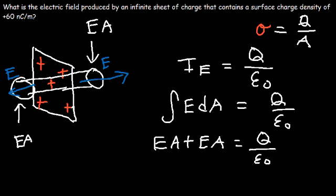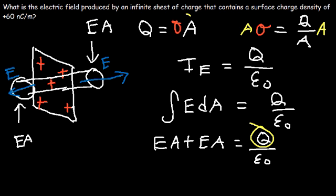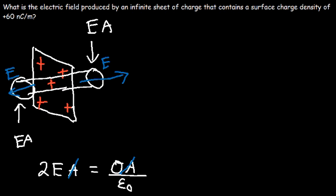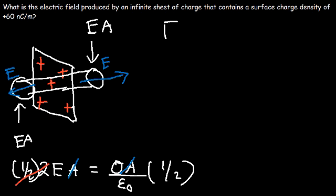Now from this equation, let's solve for Q. The total charge is equal to sigma, the surface charge density, times area. So let's replace Q with sigma times A. On the left side, we have EA plus EA, which is equal to 2EA. And Q equals sigma times A divided by epsilon-naught. So now we can divide both sides by A, and multiply both sides by one half. On the left side, all we have is E, the electric field, and it equals the surface charge density sigma divided by 2 epsilon-naught.